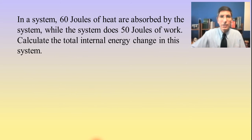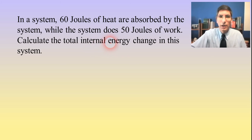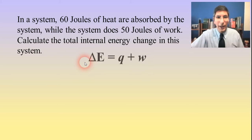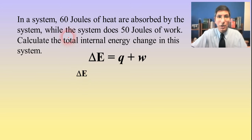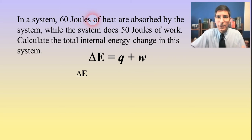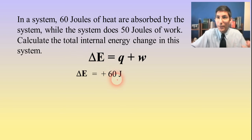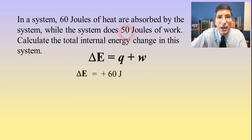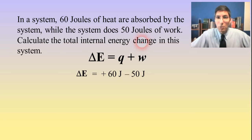Let's try some examples. Here we have a system where 60 joules of heat are absorbed by the system while the system does 50 joules of work. We use delta E equals Q plus W. Q is positive 60 joules because the heat is absorbed (gained) by the system. The work is negative 50 joules because the system is doing the work. So 60 minus 50 gives us a positive 10 joules.